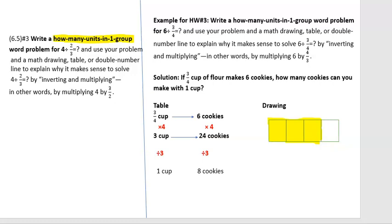Section 6.5, homework problem number 3. This section interprets the division of fractions in a different way. The question always asks how many units in one group. Units is going to be one thing, like measuring units or some kind of objects.